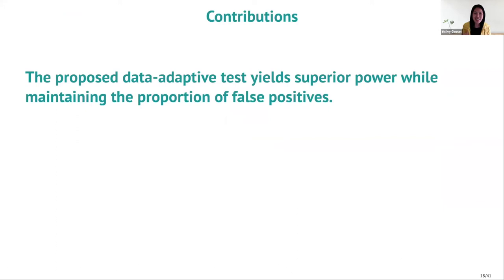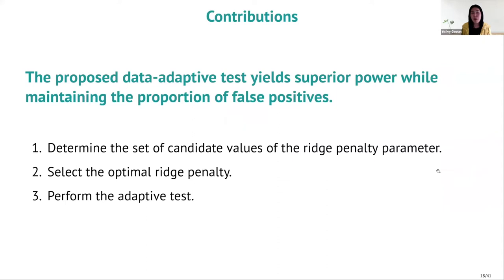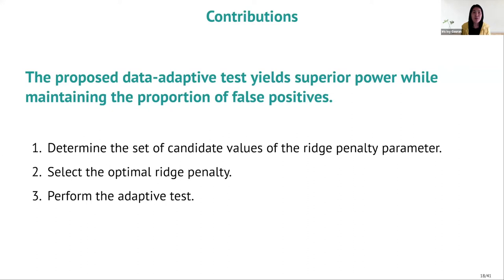This breaks the typical convention of treating the penalty parameter as strictly positive. When the penalty parameter is zero, you're not penalizing the model at all. Negative penalty parameters can yield superior results in terms of testing power. Our proposed data-adaptive test yields superior power while maintaining control of false positives. We achieve this by: first, determining the set of candidate values of the ridge penalty parameter; then selecting the optimal ridge penalty; and finally performing the adaptive test.